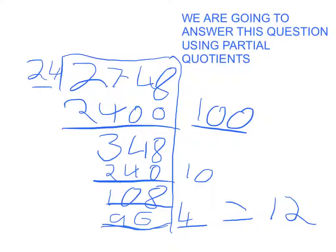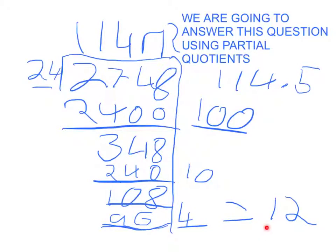So the answer is 114 remainder 12. But we don't put this. We put 114.5 because 12 is half of 24, and 0.5 is equivalent to one half. Ta-da!